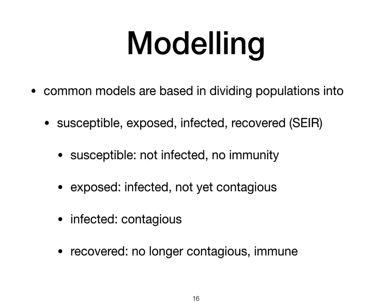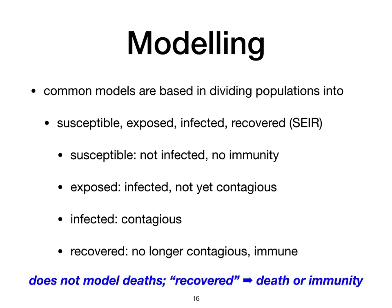On to how these things are modeled. A common way is to divide the population into four categories: Susceptible, Exposed, Infected, or Recovered — the SEIR model. Susceptible means you're not infected and have no immunity. Exposed means you're infected but not yet contagious. Infected means you are infected and contagious. Recovered means you are no longer contagious and immune. The presumption is that once you've gotten through the disease, you don't catch it again — and so far that seems to hold up. The model does not model deaths; the recovered category actually includes deaths, which is fortunately a relatively small fraction.